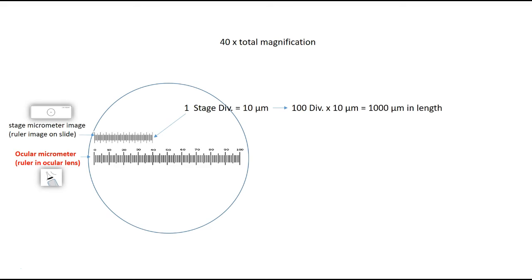If your microscope has other objective lenses — for example, many are equipped with a 100x objective lens — you'll need to go ahead and calibrate your ocular micrometer using those lenses as well. Once you've successfully calibrated for all your objective lenses, you don't have to recalculate these values ever again. The values associated with each objective lens will stay the same unless you change the lenses, so you can use these division lengths to size your specimens each time. This concludes my demonstration on how to use a stage micrometer to calibrate your ocular micrometer. I hope you found this helpful — please feel free to send me any comments below.